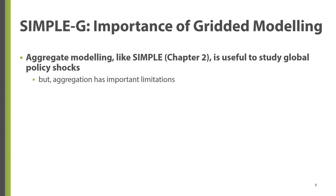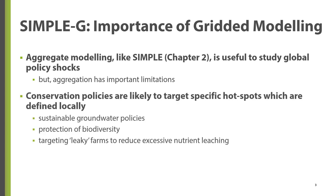The aggregate Simple model developed in chapter 2 is useful to study the impacts of global shocks, such as changes in income and population worldwide, as well as region-level policy responses to these shocks. However, there are important limitations if one wishes to study land and water conservation policies. First, conservation policies are likely to target specific sustainability hotspots, as opposed to an entire country or simple region.